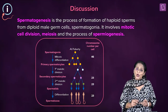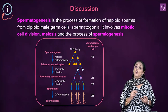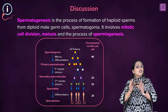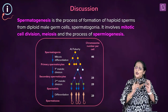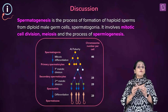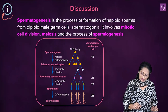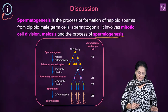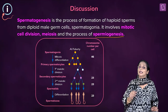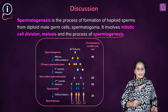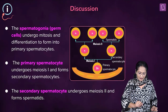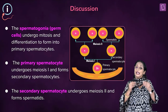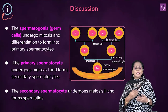Spermatogenesis involves mitotic division, meiotic division, and also the transformation of a non-motile cell into a motile cell — for example, a non-motile spermatid into a motile spermatozoa. That process is called spermiogenesis. What you see here is the diagrammatic representation of spermatogenesis.